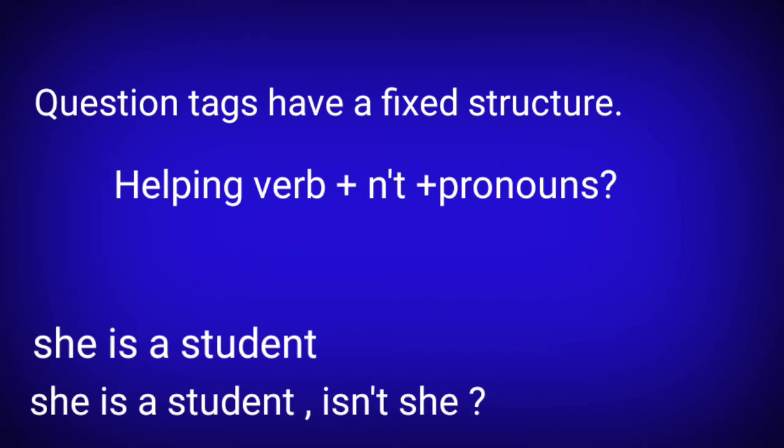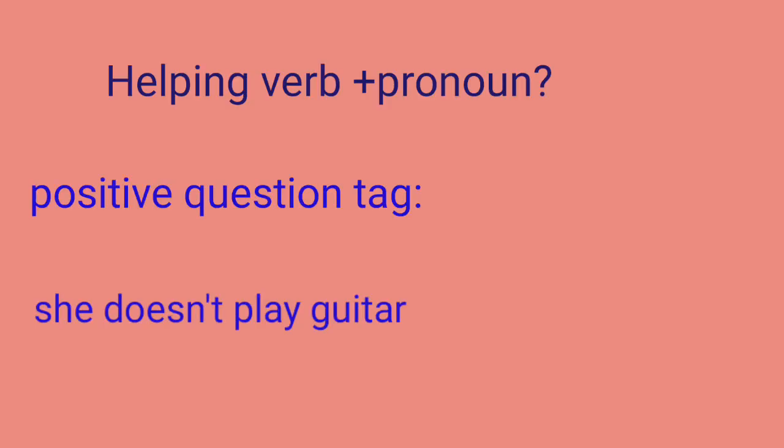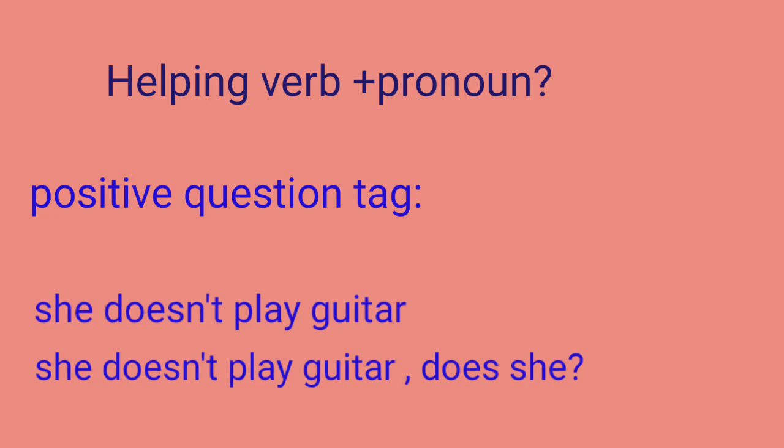Example: 'She is a student.' This is a positive statement, so we add a negative tag: 'She is a student, isn't she?' The positive tag structure is: helping verb + pronoun + question mark. Example of a negative statement: 'She doesn't play guitar.' It is a negative statement, so we change it to positive tag: 'She doesn't play guitar, does she?'